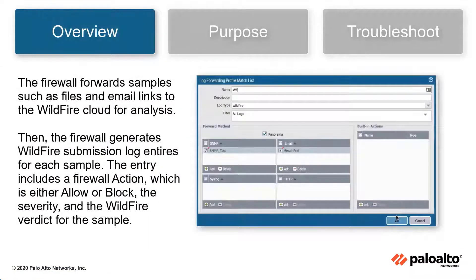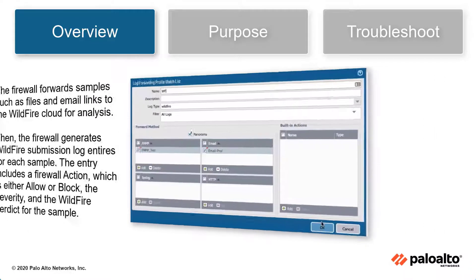The firewall forwards samples such as files and email links to the WildFire cloud for analysis. Then it generates WildFire submission log entries for each sample. The entry includes the firewall action, which is either allow or block, the severity, and the WildFire verdict for the sample.